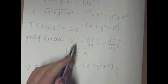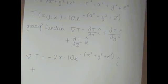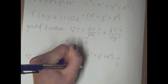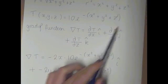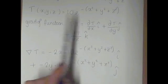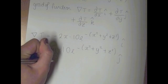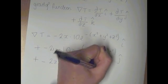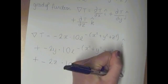And then we add on this equation again, but this time we're going to partially differentiate it with respect to y. So that makes minus 2y times 10e to minus (x squared plus y squared plus z squared), and then we times it by k.